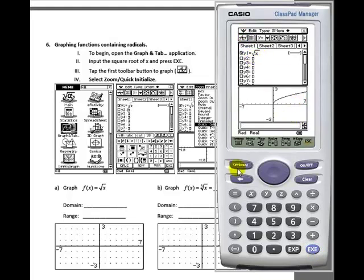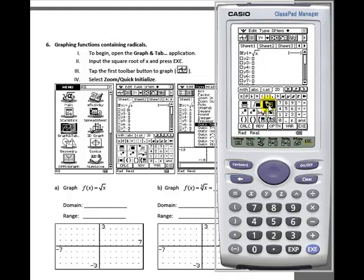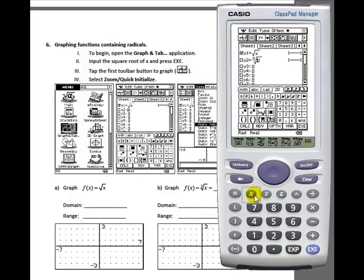However, when they begin with the cubed roots, the ClassPad does something very interesting. For example, the cubed root of x. Notice what happens when I press exe. It automatically changes to x raised to the 1 3rd power. And the students will discover that the nth root of x is equal to x raised to the 1 over n.